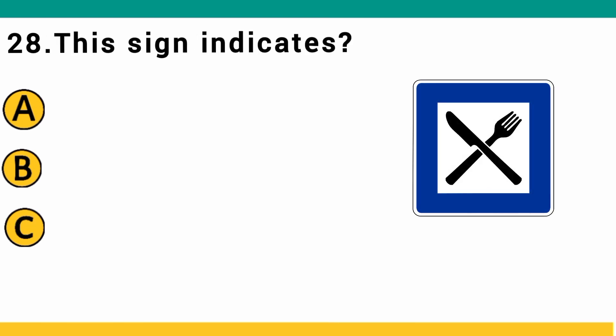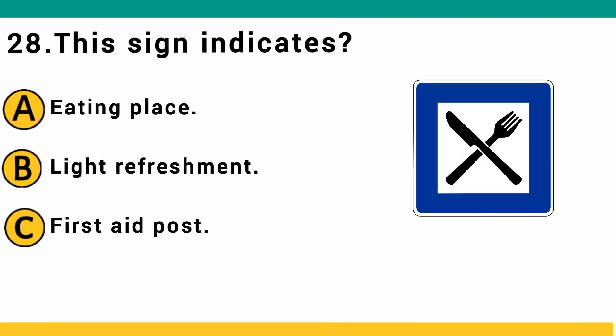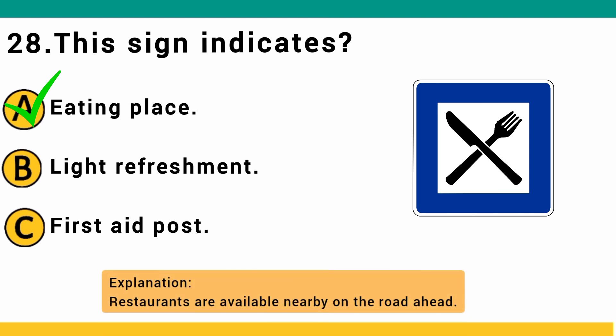This sign indicates: A) eating place, B) light refreshment, or C) first aid post. The correct answer is A: eating place. Restaurants are available nearby on the road ahead.